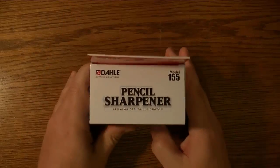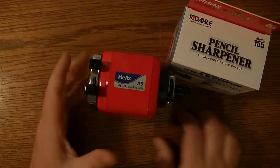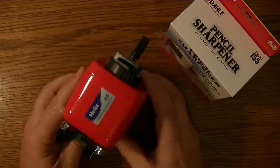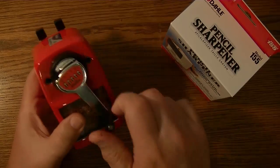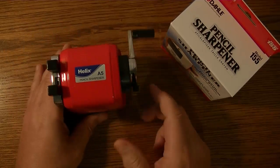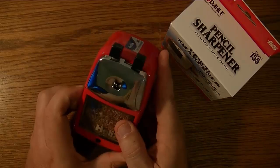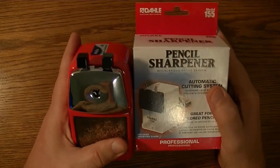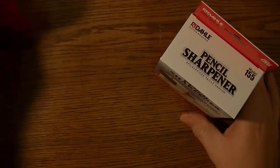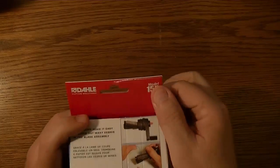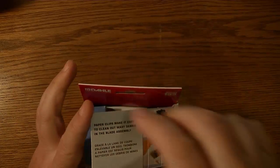Alright, wonder how it's going to compare with my favorite hand crank sharpener, the Helix A5 from the UK. Clearly they both have that mechanism in the front, but let's take a look and open up the box. This here is the model 155 by the way. They happen to have different models, but this one was actually recommended, so I went ahead and bought it.